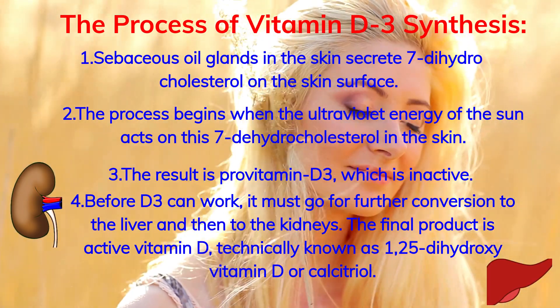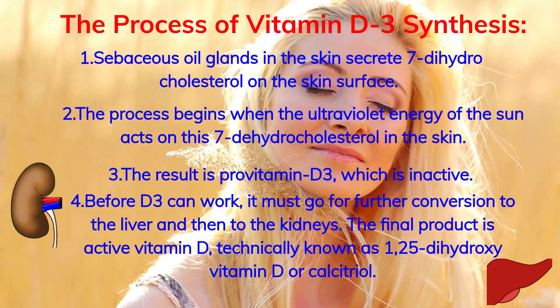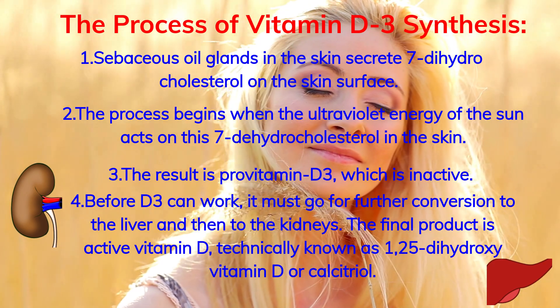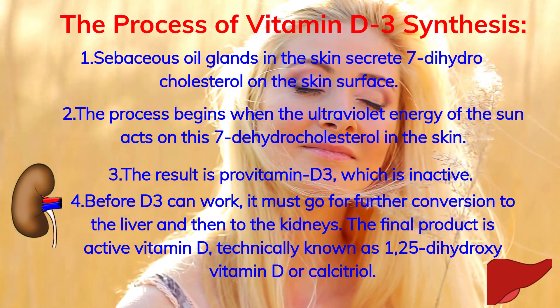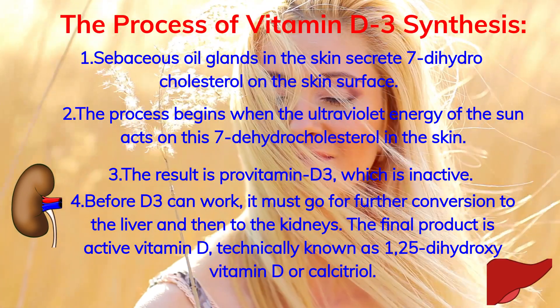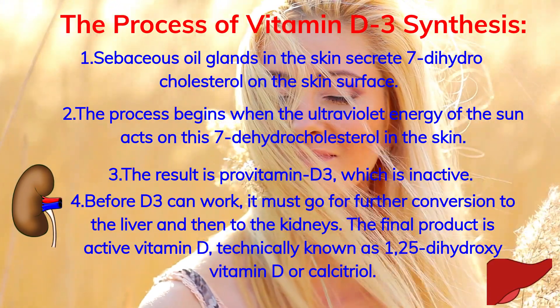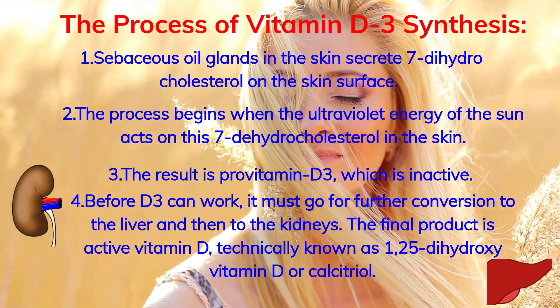Before D3 can work, it must go for further conversion to the liver and then to the kidneys. The final product is active vitamin D, technically known as 1,25-dihydroxy vitamin D, or calcitriol.